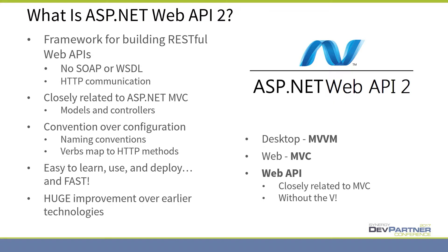So what is Web API 2? As you've probably guessed, it's a framework for building RESTful Web APIs. It was designed from the ground up for building RESTful APIs. There is no SOAP in this environment, there is no WSDL in this environment. It always uses HTTP or HTTPS, so it's not like WCF where you can choose various network protocols — it's specifically REST over HTTP.